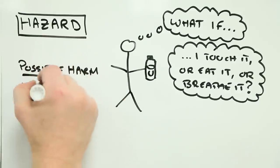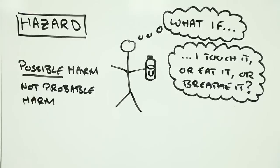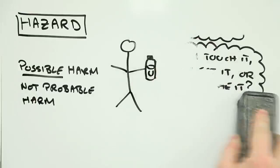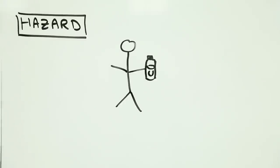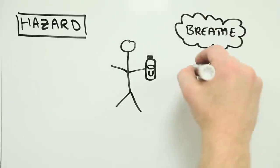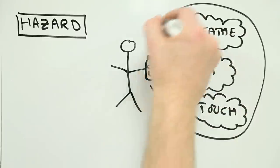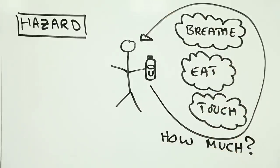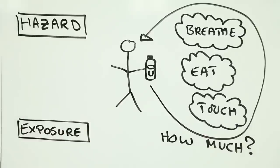But hazard alone doesn't say anything about risk. It doesn't matter how hazardous the unobtanium is, if you're not exposed to it, it cannot directly harm you. So the next thing we need to know is how much unobtanium you're exposed to, including how it gets into your body and where it goes once it gets there.